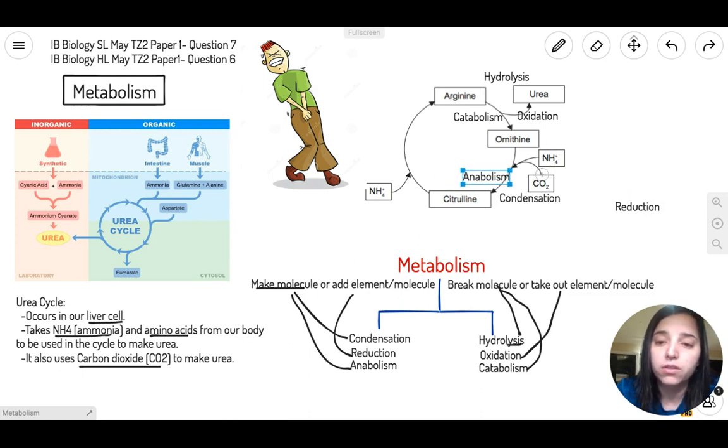It can be this side, or it can also be citrulline with ammonia turning to arginine. That's anabolism. You're adding an element such as ammonia coming to be added to citrulline to become arginine. If you go back here and say that reduction is the addition of elements or molecules, that means this reduction right here can fall right here too.